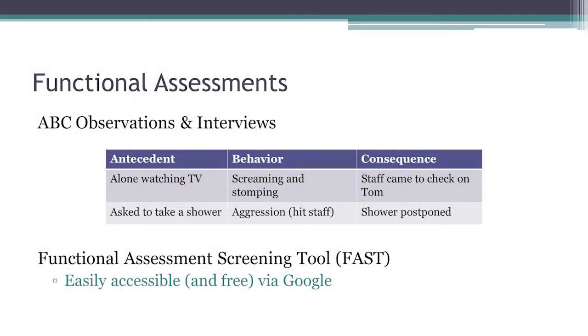For ABC observations and interviews — the direct assessment piece — you just create a simple note sheet in three categories: what's going on beforehand, whether any target behaviors occur, and how people respond. You notice those patterns across times and across settings. For example, if the individual is alone watching TV, then starts screaming and stomping, and staff come in to check — what might be the function there? It might be attention. But it could also be anything else — it's just that staff come in when there's a problem.